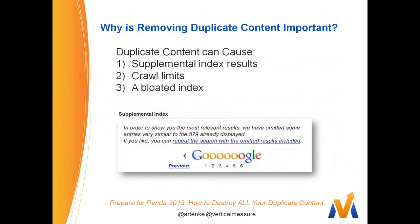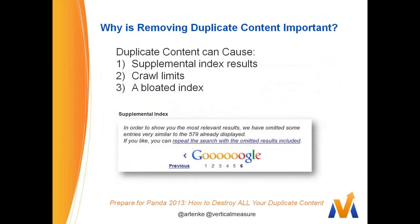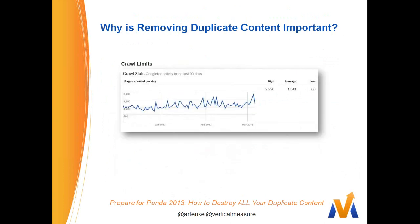Duplicate content can cause a number of issues. First, supplemental index results — you'll see truncated results at the bottom of Google. Any time you see the words 'omitted results,' you don't want to be part of that phrase. Google is basically saying you've got too much of the same thing. Crawl limits can also be imposed, and you can have a bloated index. Your site basically has a crawl budget — Google bots will crawl your site, but there's a specific limit.